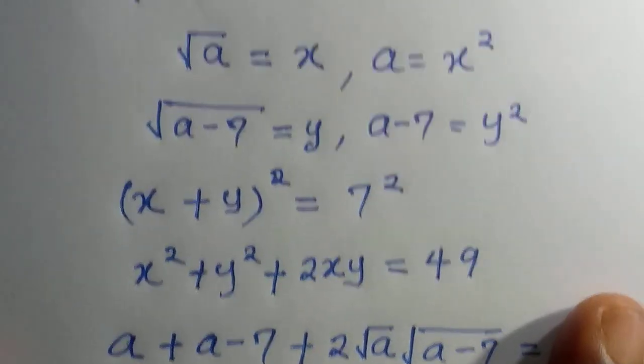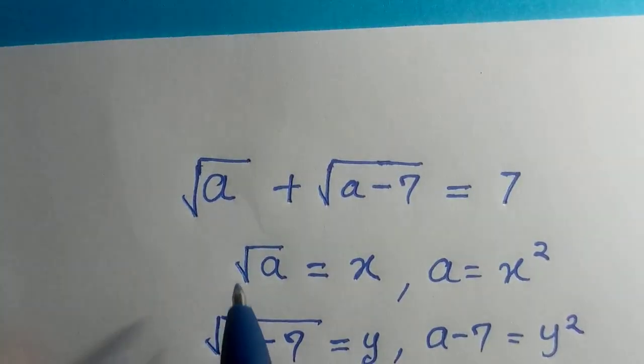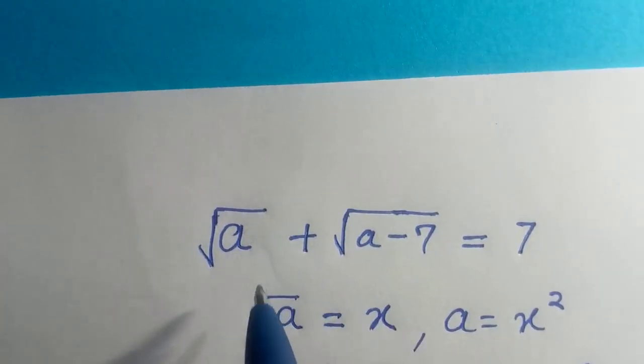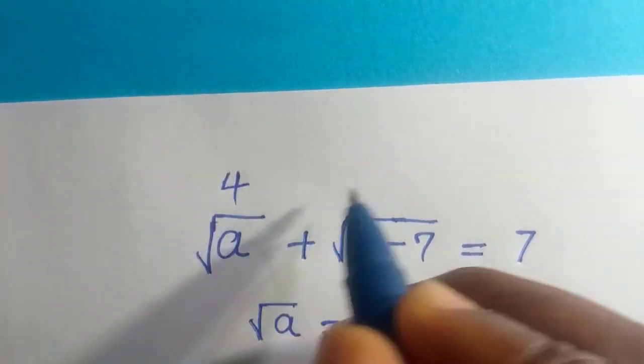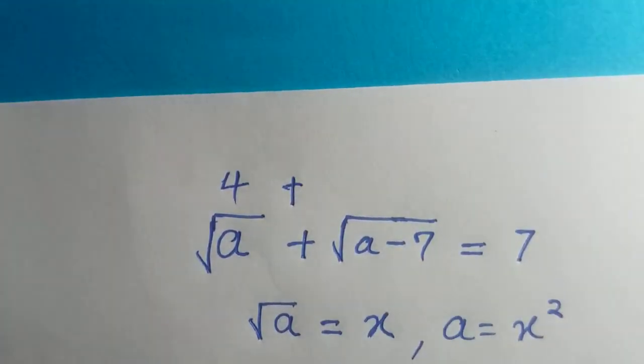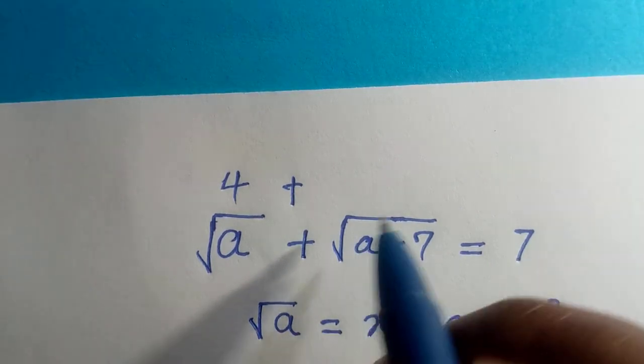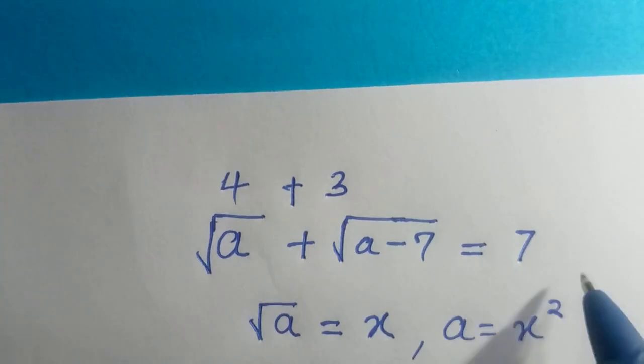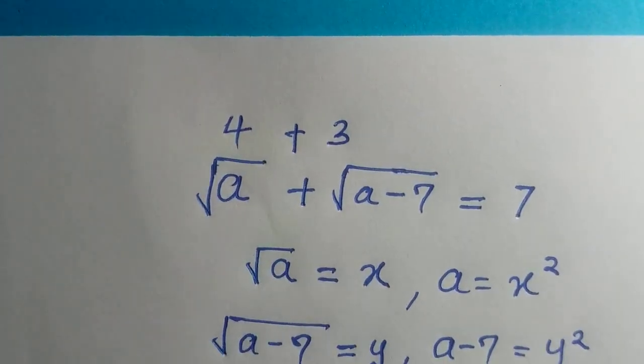Because when we try to check this, when we substitute this as 16, here we have it as 4 plus, so 16 - 7 that gives us 9. And √9 = 3. Then 4 + 3 = 7, as it requires.